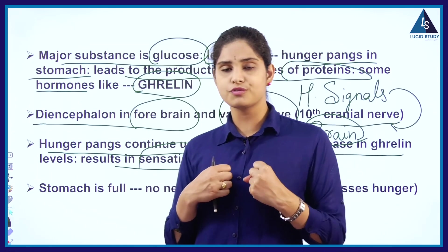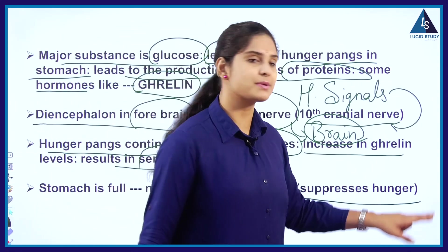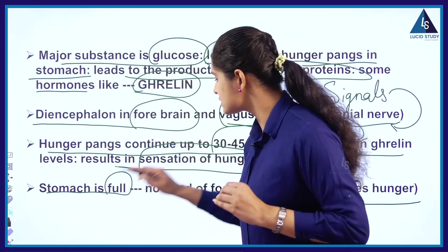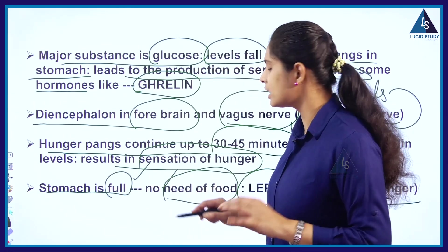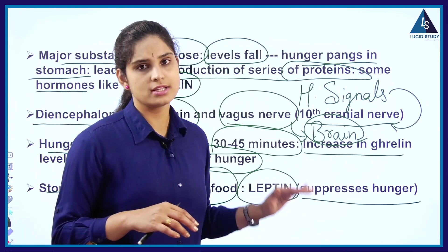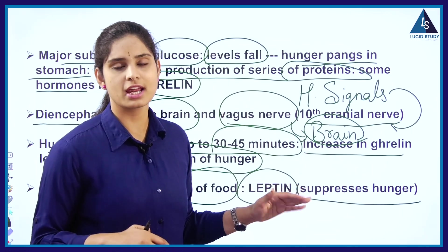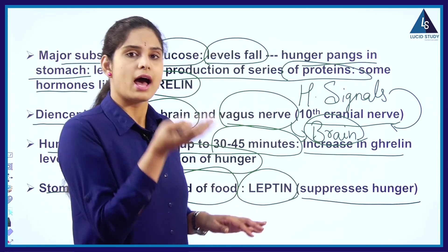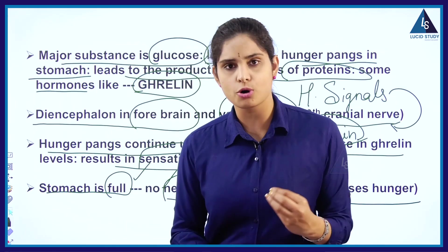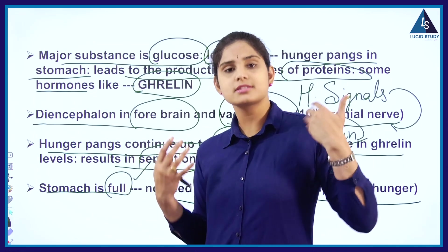Once you consume food, there is secretion of another hormone called leptin, which suppresses the hunger feeling. When you feel your stomach is full, there is no need to eat. Leptin suppresses the hunger sensation generated by ghrelin. So ghrelin increases the sensation of hunger, and leptin suppresses it. These are the two hormones acting within our stomach, and this is said to be the first step towards the digestive system — the physiology of why we eat food.